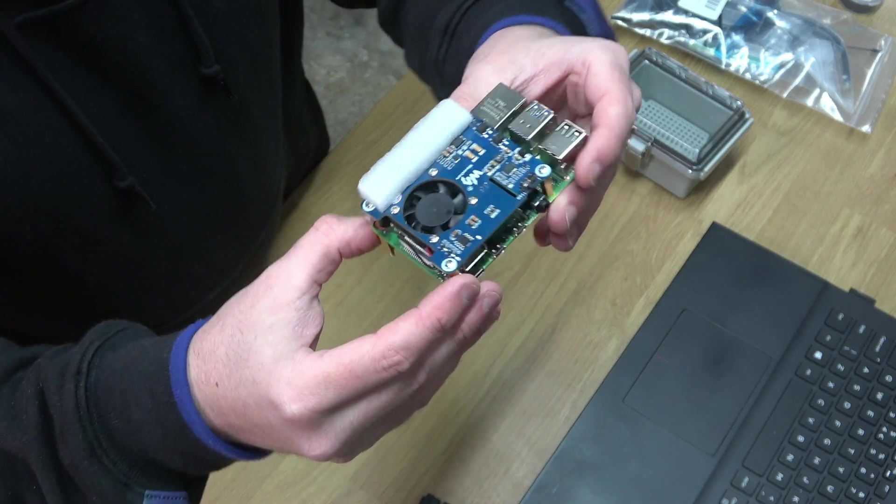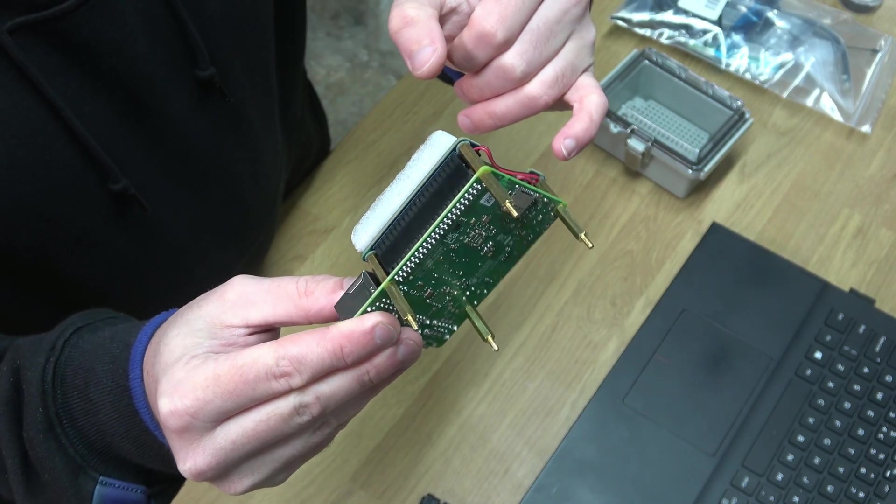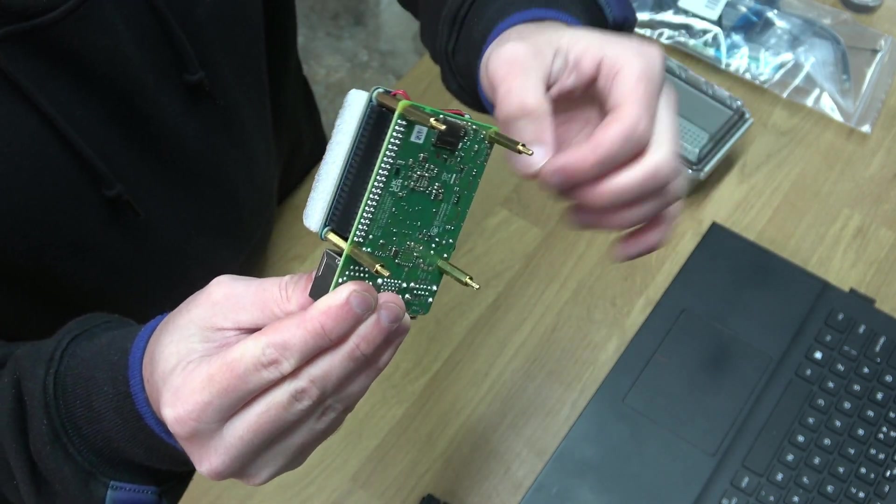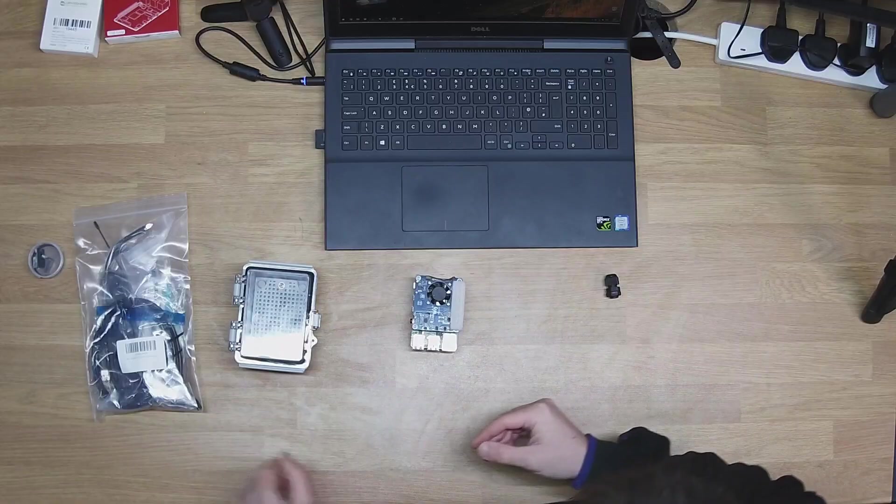And blue peter moment incoming, here's one I built earlier. Okay so I have this built up on the posts. The posts that are in the centre came with the PoE hat and then I've added on some extra ones on the bottom. There is a valid reason for that.